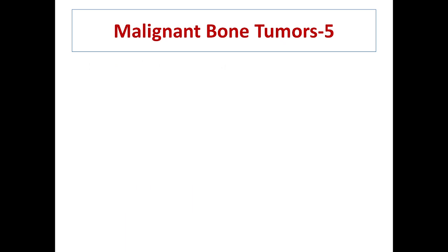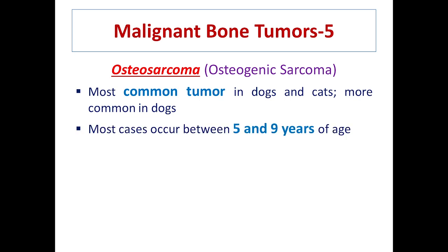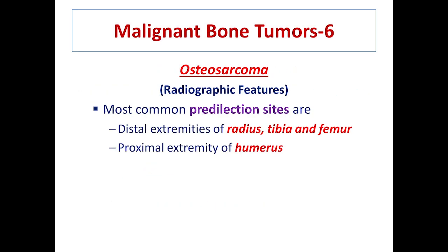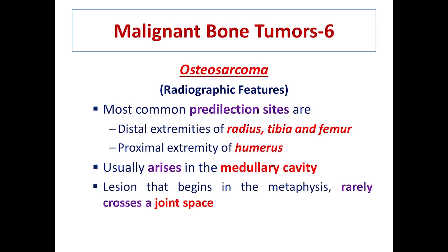Osteosarcoma, or osteogenic sarcoma, is the most common tumor in cats and dogs but is more common in dogs, especially in older animals between five to nine years of age. It is divided into three types: the lytic type (osteoclastic), the sclerotic type (osteoblastic), and the mixed type in which lysis and sclerosis occur simultaneously, which is the most common. The distal extremities of the radius, ulna, tibia, and femur, and the proximal humerus are the most common predilection sites. Osteogenic sarcoma usually arises in the medullary cavity beginning in the metaphysis and rarely crosses the joint space.